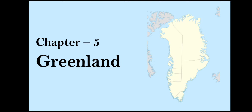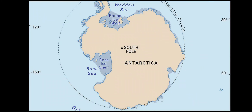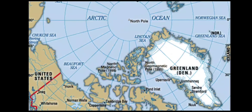The regions around the North Pole and the South Pole are the polar regions. There is the Arctic Ocean around the North Pole and the Antarctica continent around the South Pole. The Arctic Ocean is surrounded by Asia, Europe and North America.